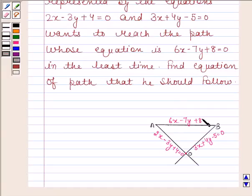Now let AB be the path where the person wants to reach and the equation of AB is 6x minus 7y plus 8 equals 0. He has to reach this path in least time. The shortest path from O to the path AB is perpendicular from O to AB. So this means we have to find equation of perpendicular path OM. Now keeping all this in mind, let's now begin with the solution.